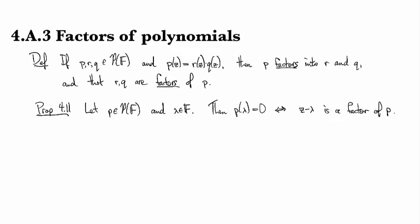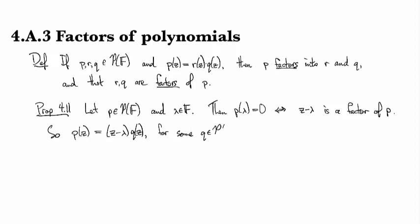A little bit more can be said. We can say that P of z then looks like z minus lambda times Q, for some polynomial Q.